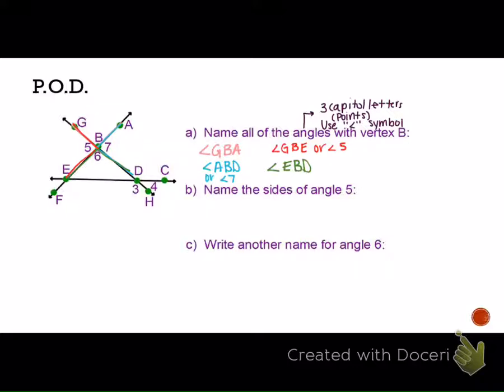For example, angle ABD is also angle 5. And angle GBE is also angle 6. If there's a number in the middle, you can use that as well. Name the sides of angle 5. The sides are two rays. What are the two rays that make up angle 5? Ray GB and ray BE.